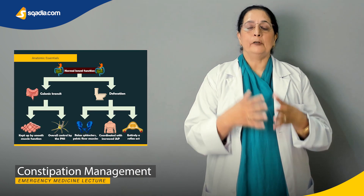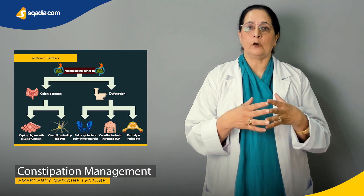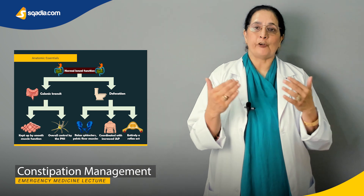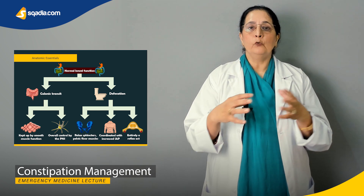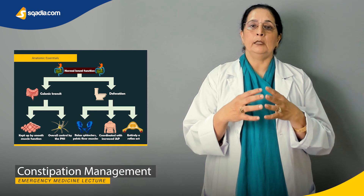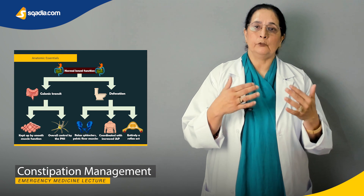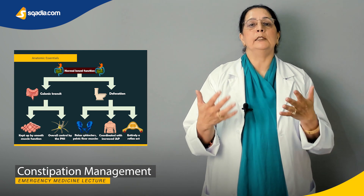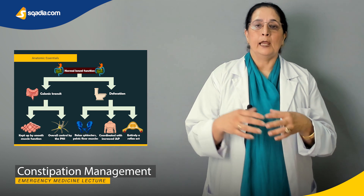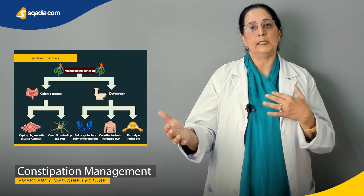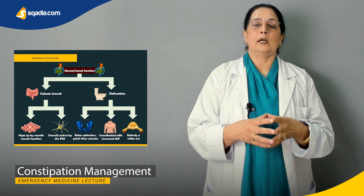Then we will talk about some anatomic essentials for constipation. Anatomic essentials play an important role: one is the transit in the colon — the movement time of the waste product through the colon — and what are the different factors that influence that transit time.